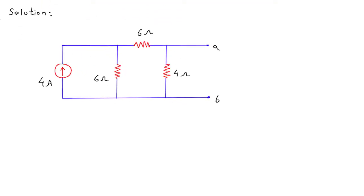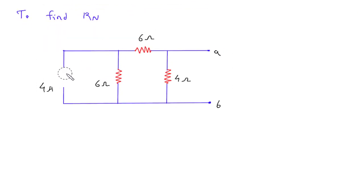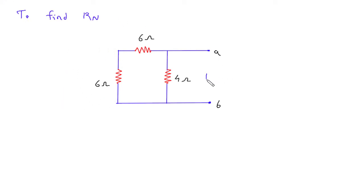Now we have to find Rn and In. To find Rn, we will open circuit the current source. This current source will be open circuited, and this will be Rn. So Rn, Norton's resistance, is equal to 12 ohm — 6 plus 6 is 12 — so 12 ohm parallel with 4 ohm.